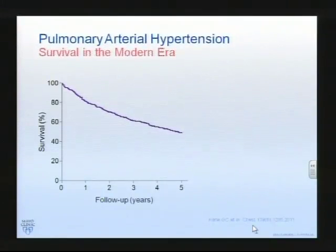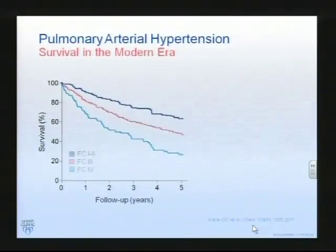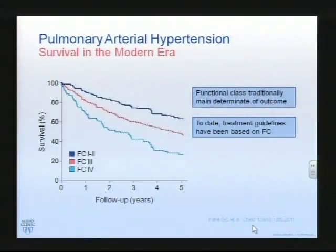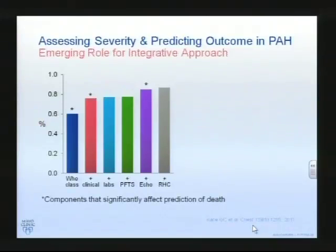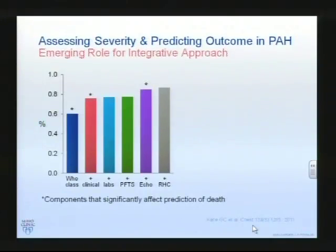If you look at survival in pulmonary hypertension, it hasn't changed a great deal in the modern era, but we've become perhaps a little better at identifying those patients who are likely to do well or worse. Not surprisingly, patients with functional class 4 tend to do more poorly. The difficulty is being reliable in our predictions, which is a challenge in this as in many other conditions. Functional class, clinical status, and echo data are probably the most reliable indicators of prediction of death in these patients.